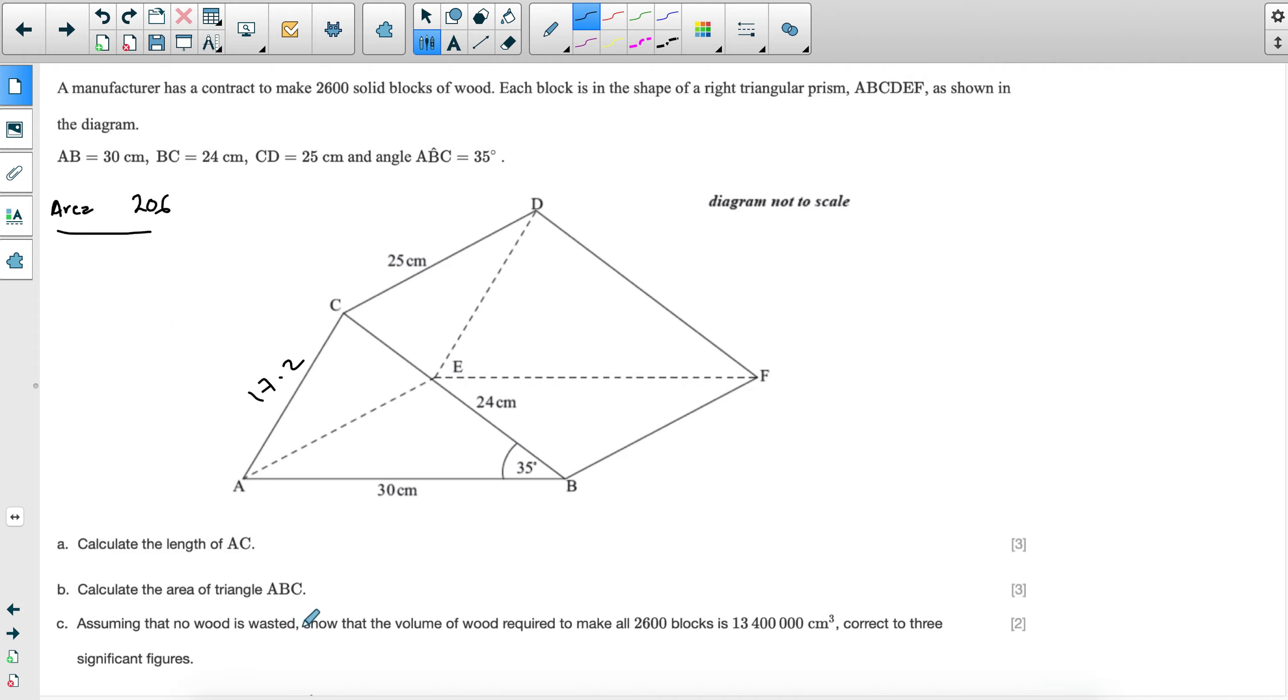Part C says, assuming that no wood is wasted, so this assumption is usually just to make your calculations easier, show that the volume of the wood required to make 2,600 blocks is 13,400,000 centimeter cubed, correct to three significant figures. To find a volume of a triangular prism, or any prism, you take the area of the face and you multiply it by the length or the height that it extends with, which is why I said it's important to get the correct area. So the volume will be what they call the area of cross section multiplied by the length or the height. This is just how much does it extend. This triangle will extend 25 centimeters until it gets to here.